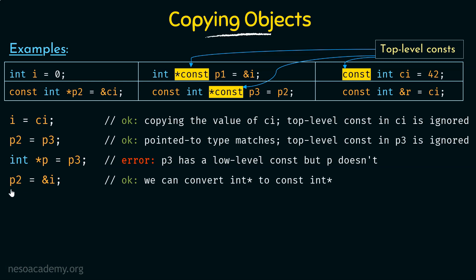Here I'm saying p2 = &i, storing the address of i in p2. p2 is a pointer to constant integers, but i is a simple integer — will I be able to make this happen? Yes, because we can convert the simple integer to a constant integer. This integer will be converted to a constant integer and that address of i will be copied to p2. Either the low-level constant qualifications should match, or there should be some conversion that can take place to make them match. In this case it was not matching, but we could do a conversion to make it match, so this is valid.